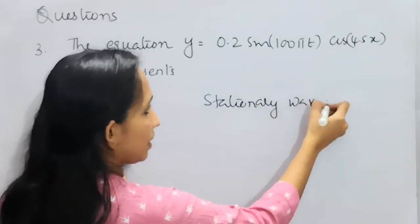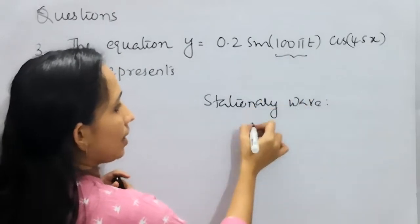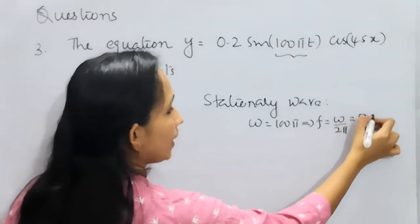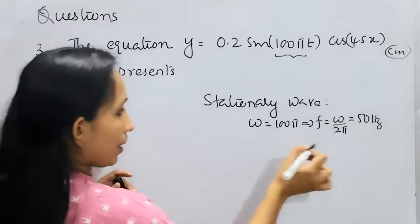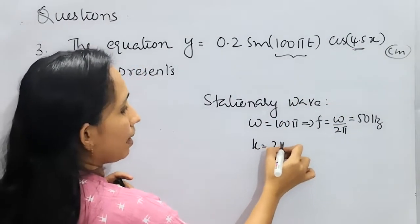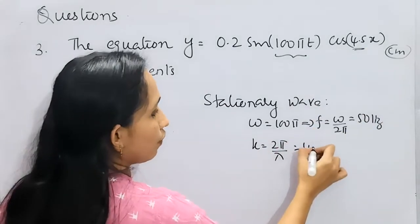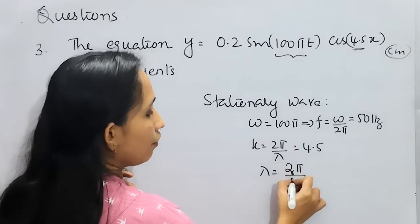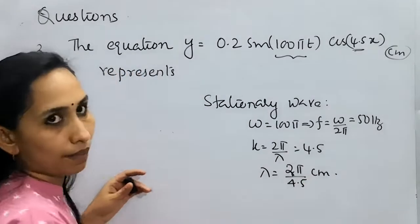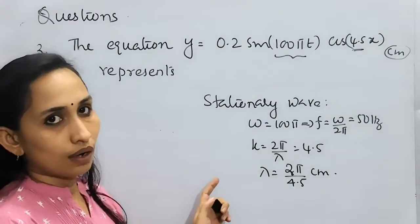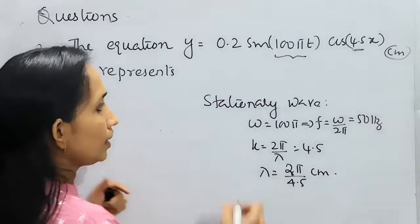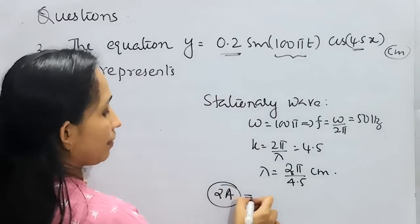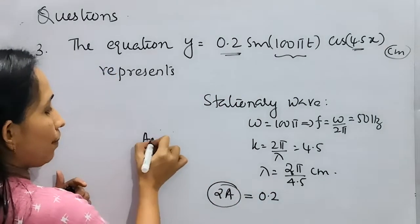Let us look at all possible questions. Omega = 100π, so frequency = ω/2π = 50 Hz. k = 2π/λ, and k equals the coefficient of x = 4.5, so λ = 2π/4.5. If given as a decimal, substitute π = 3.14 to find the answer. Amplitude of the stationary wave 2a = 0.2, so amplitude of each component wave a = 0.1 cm.